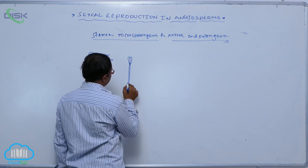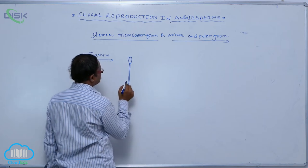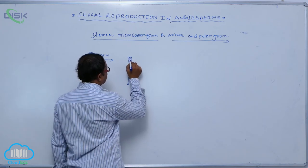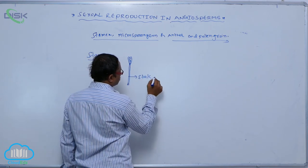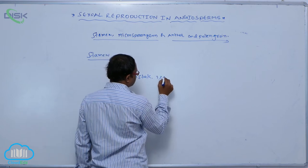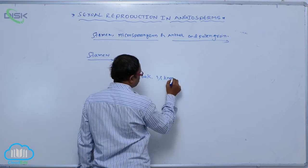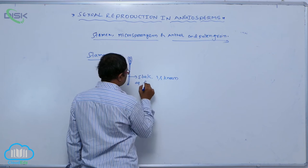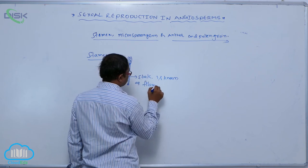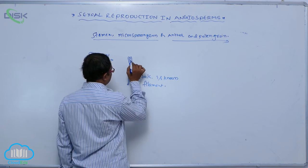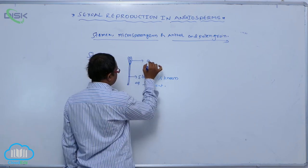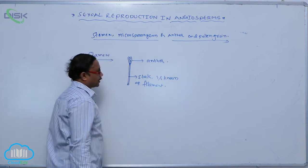Stamen has mainly two parts. Below is a stalk-like structure known as the filament. The stalk connects to the broad structure above, which is known as the anther.